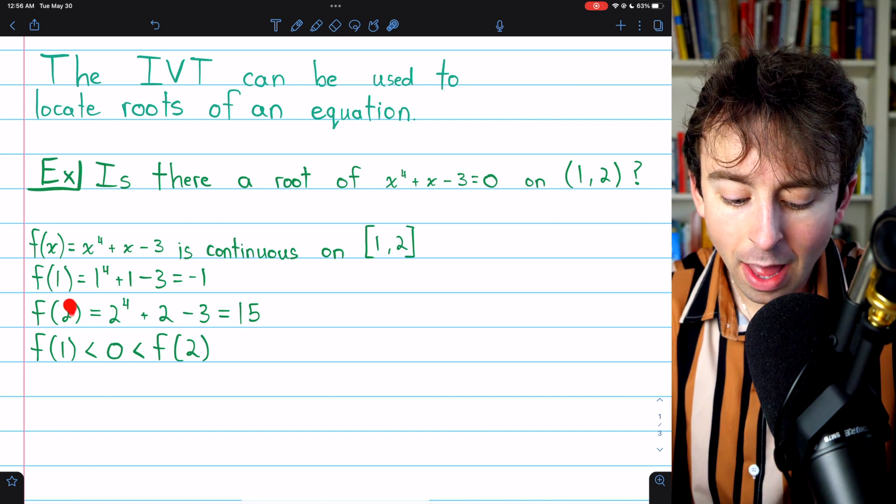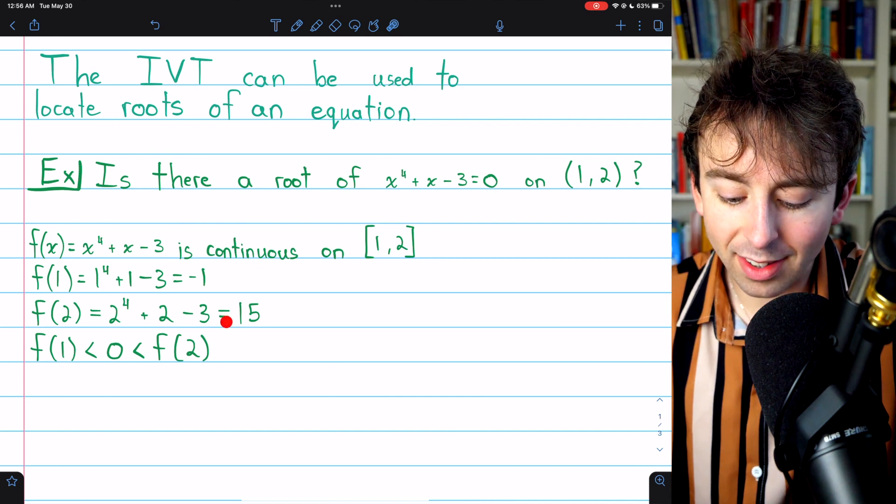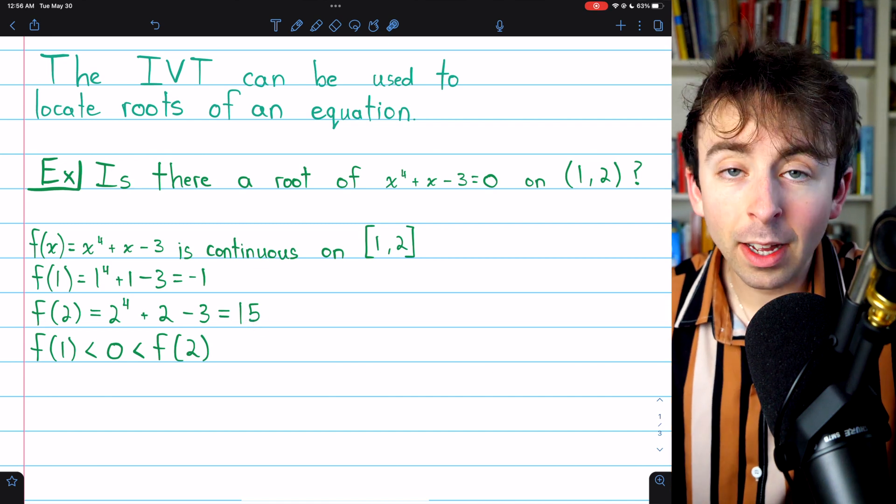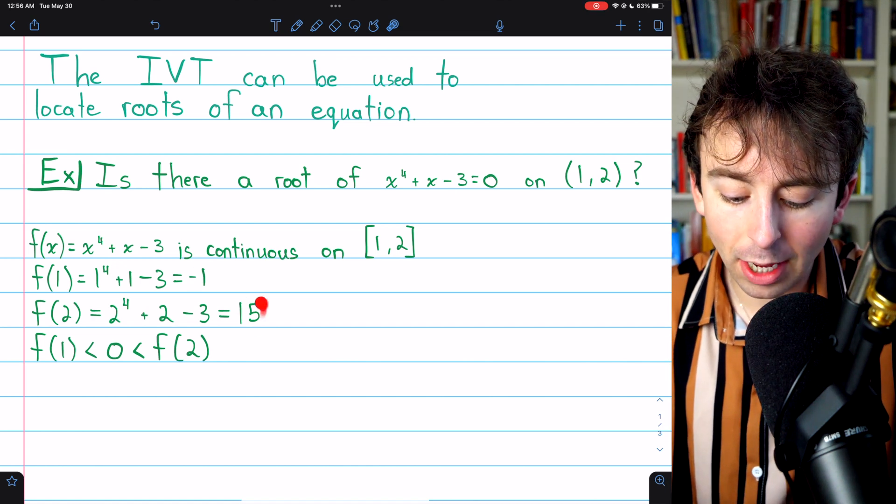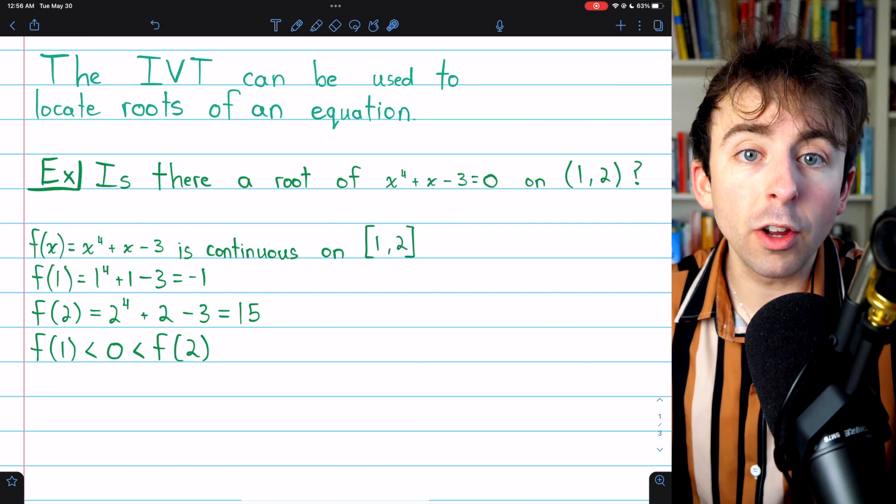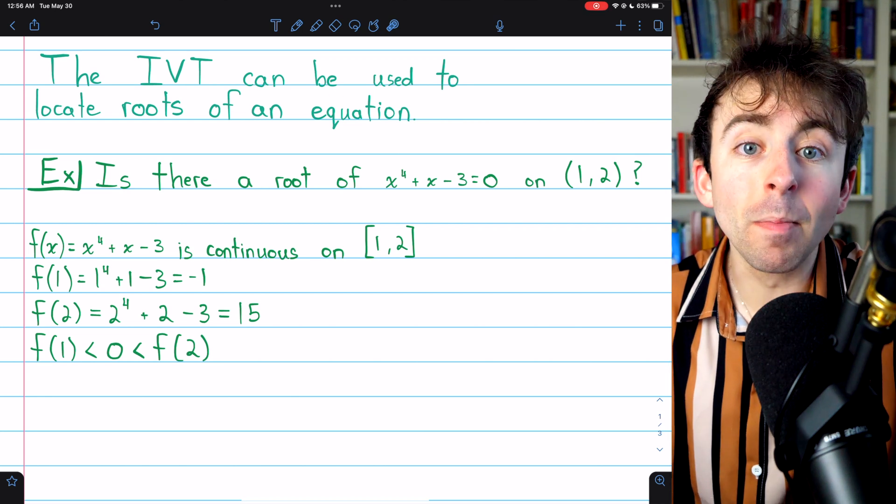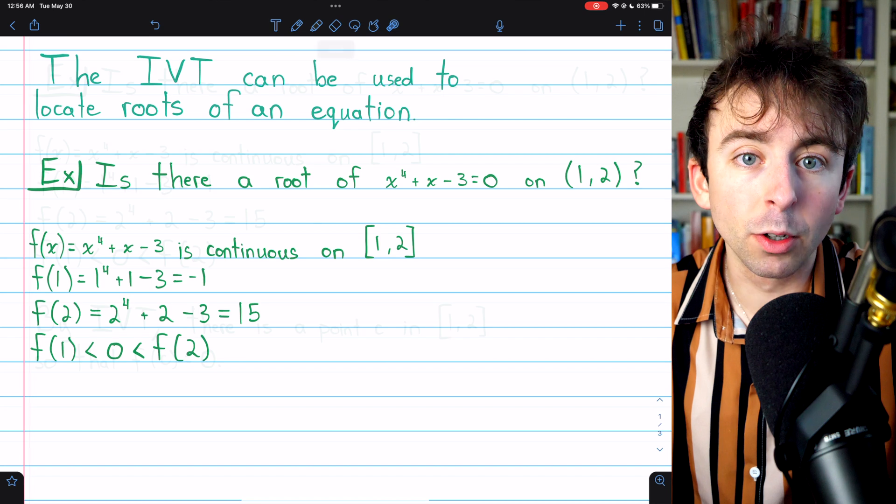Then we look at the ending value, f(2), and we find that it's equal to 15. So it started negative, it ended positive. Since the intermediate value theorem applies, the function must have passed 0 at some point in the interval.